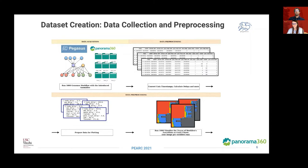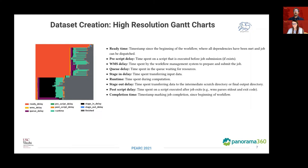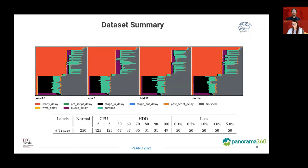These high-resolution Gantt charts show the execution timeline of our workflow. As seen in this slide, these Gantt charts incorporate various workflow manager and queue delays, as well as transfer delays and time spent on computation. Our final dataset contains 1000 workflow traces and four main classes: normal, hard disk, CPU, and network loss. Each of the individual classes contains 250 traces, and for the classes describing anomalies, there are further subcategories based on their magnitude.